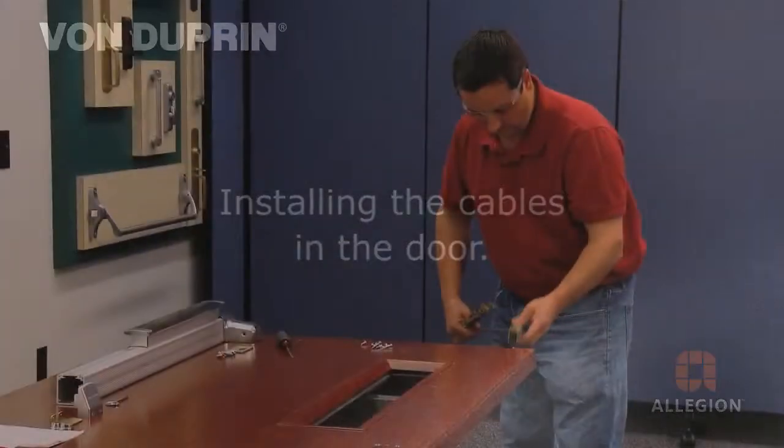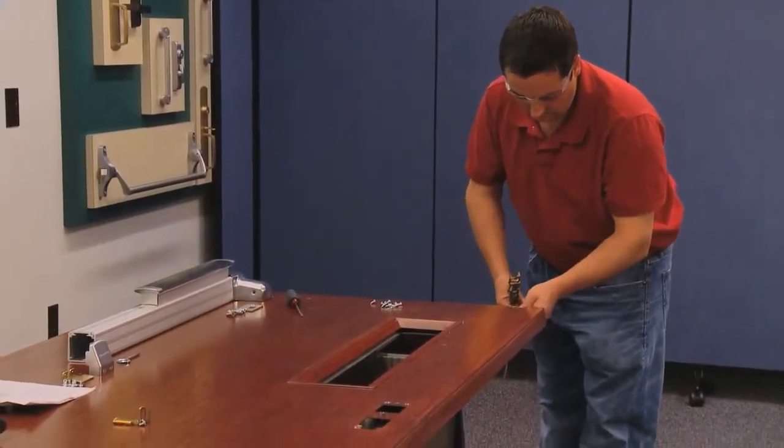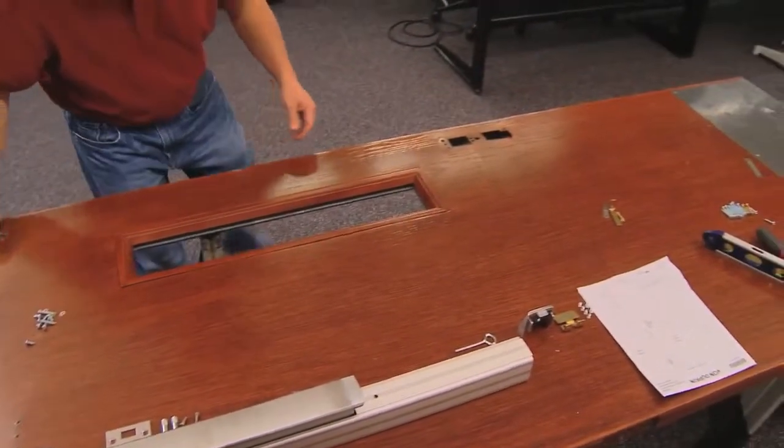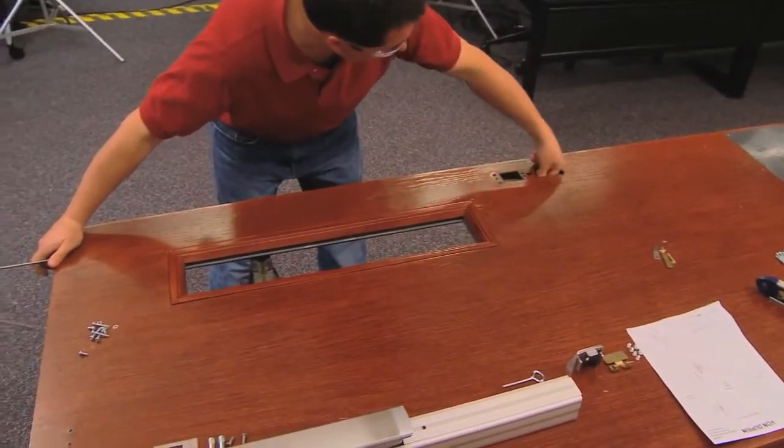Starting at the top of the door, slide the assembly, bottom latch first, through the door. You may need to guide the bottom latch through the door using the center case trim prep.